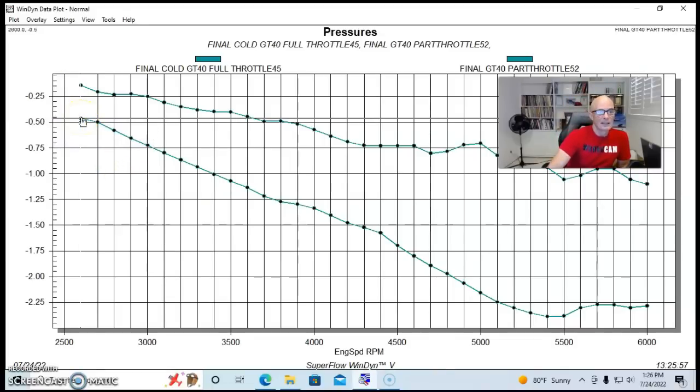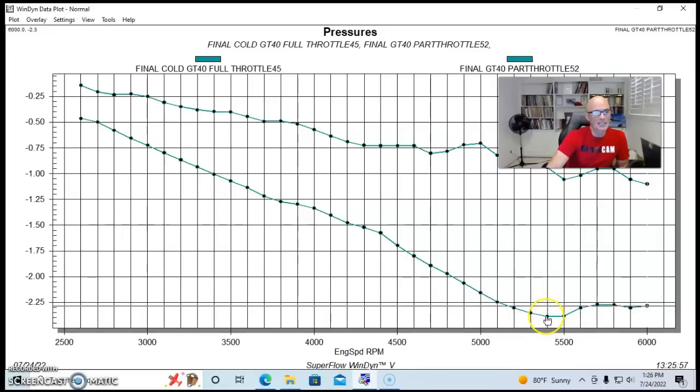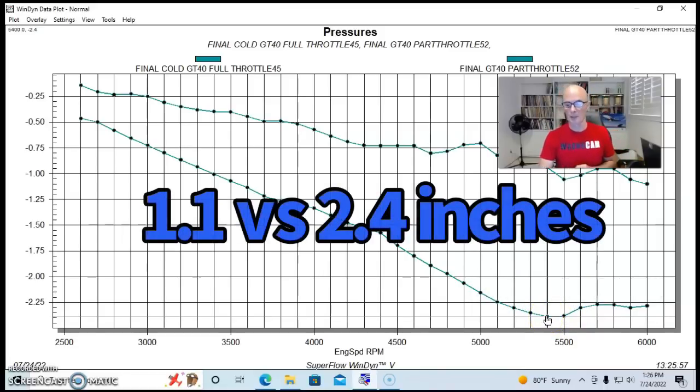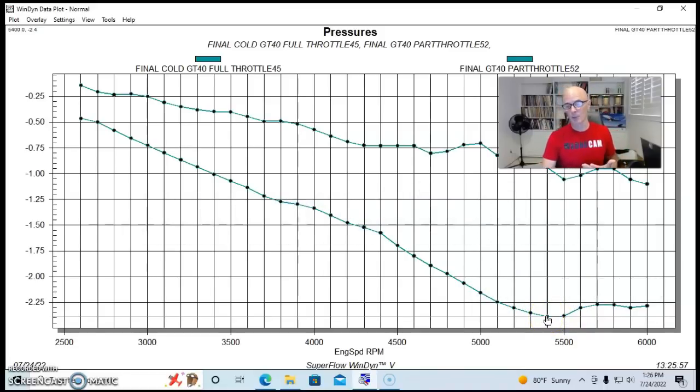We saw five tenths of an inch, so half an inch of vacuum, even down at 2600 RPM with the throttle opened at half throttle. And that increased all the way to 2.3 inches of vacuum. In fact, it got as low as 2.4 inches of vacuum at 5400 RPM, and then changed a little bit as the motor started making less power as we carried out from 5500 to 6000 RPM.